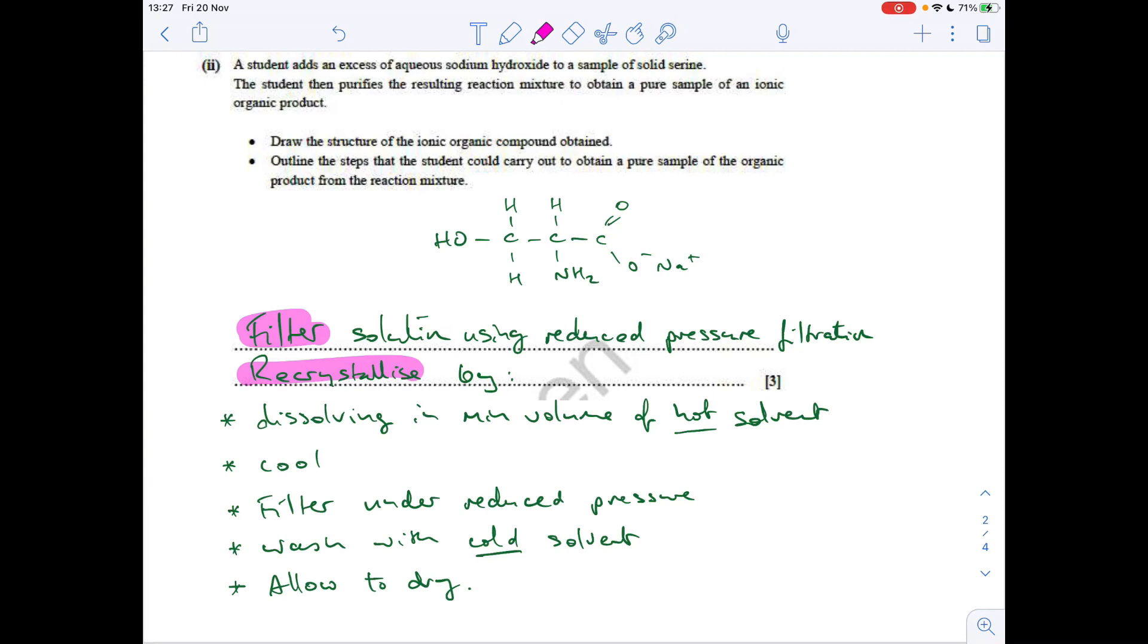They'd filter it again under reduced pressure, and then they'd wash it with cold solvent, and then allow it to dry. To be fair, the mark scheme only really wanted to see filter and recrystallise in the student answers. There's only three marks going for it, but we might as well use this opportunity. If there were more marks going for it, you'd have to say all of the stuff that I've said there. Filter using reduced pressure, recrystallise by dissolving in the minimum volume of hot solvent, that minimum's key, cool it back down, reduce pressure filtration again, wash with cold solvent, and then allow it to dry.